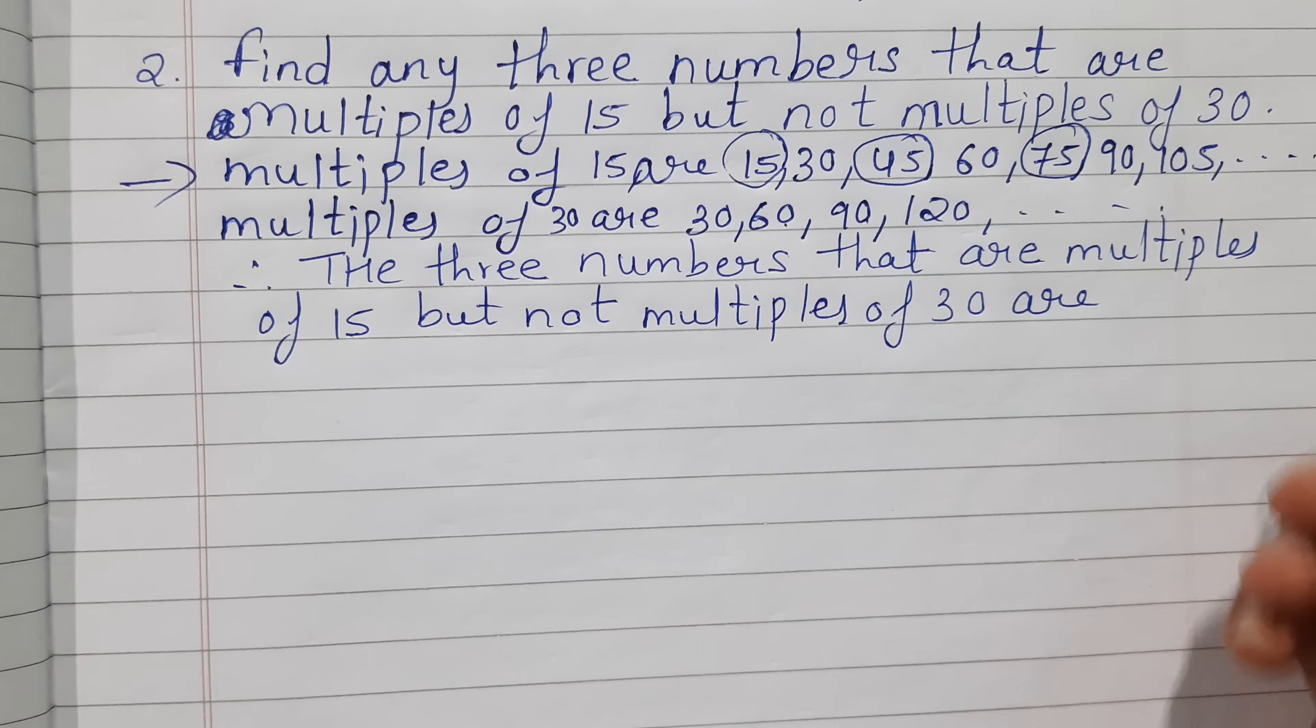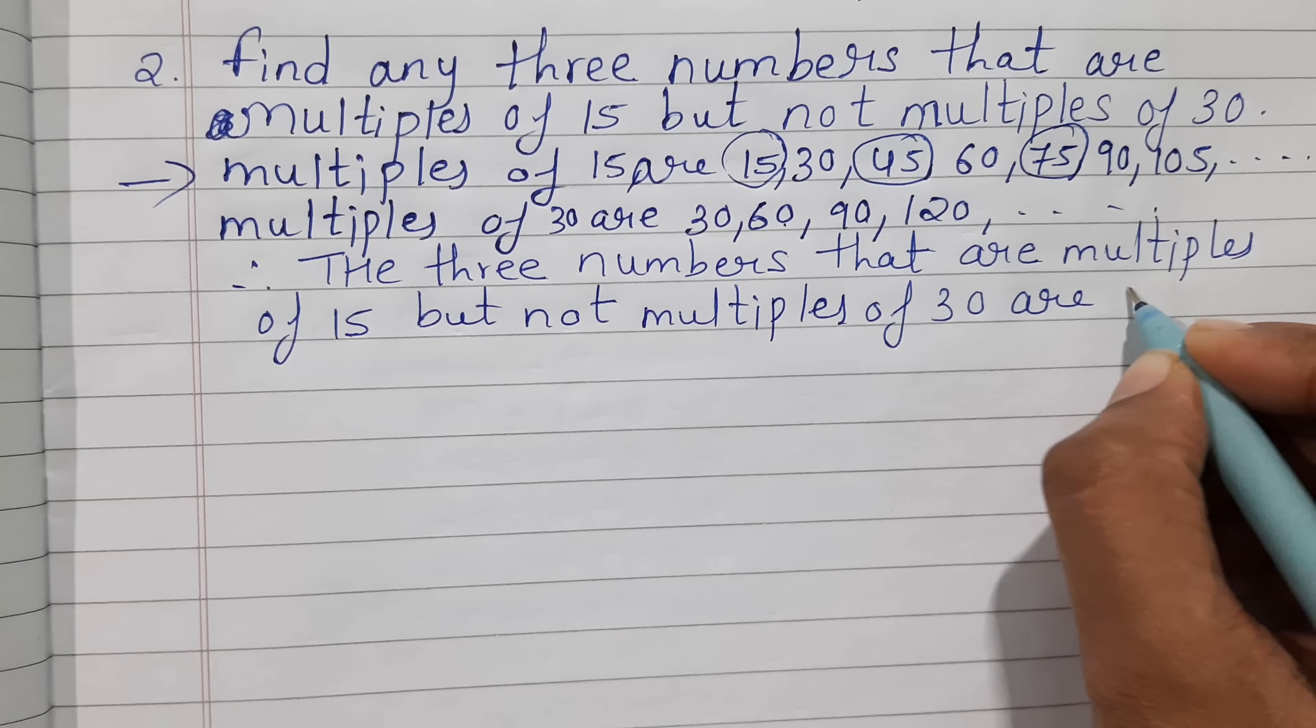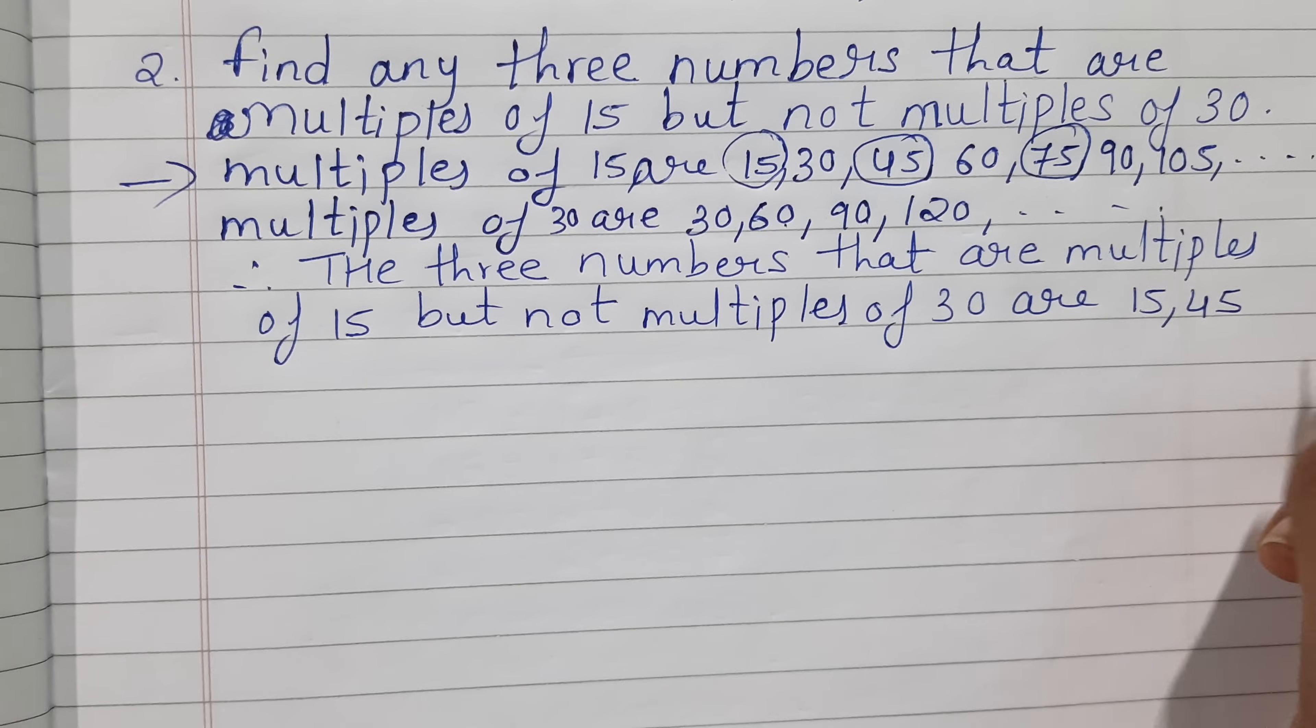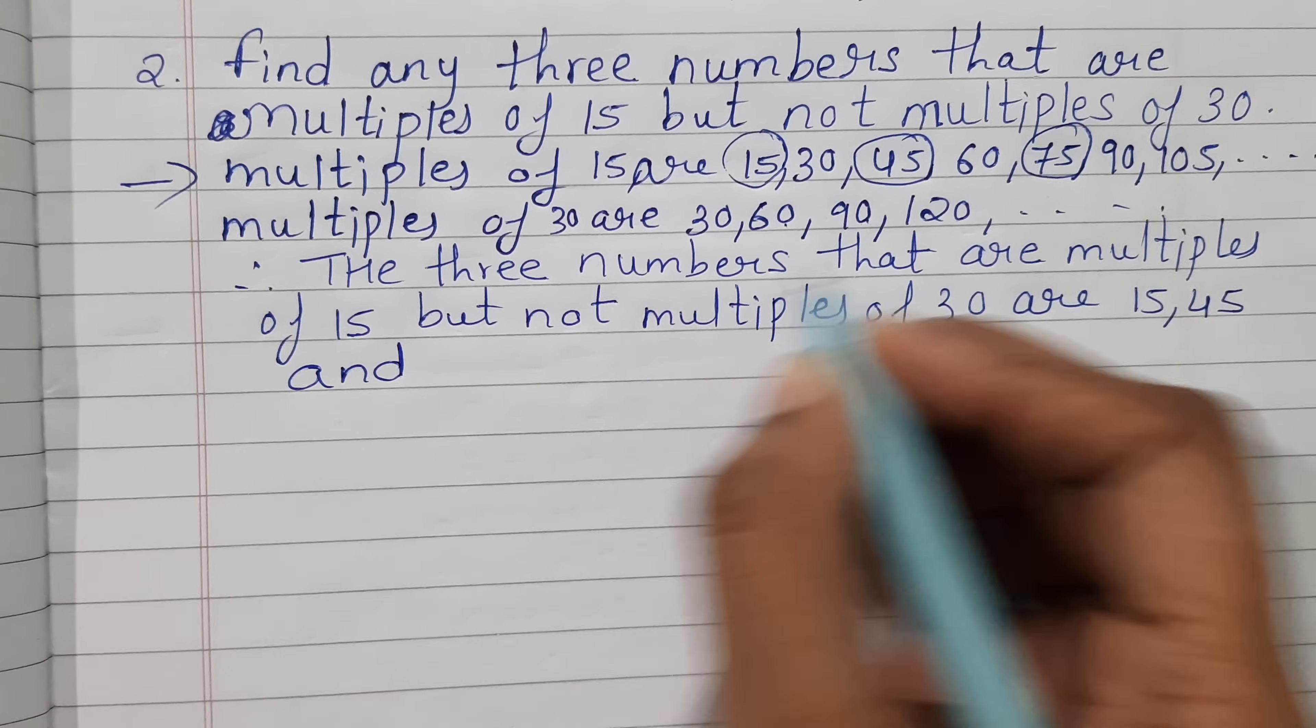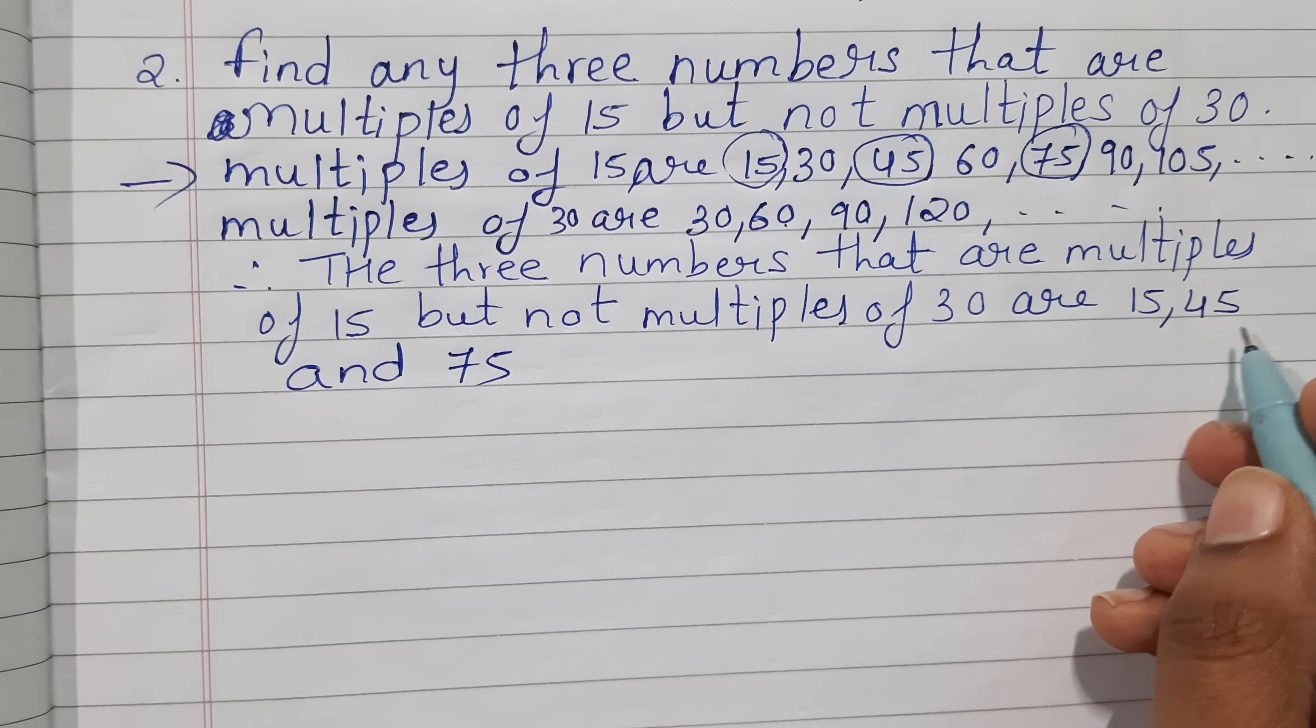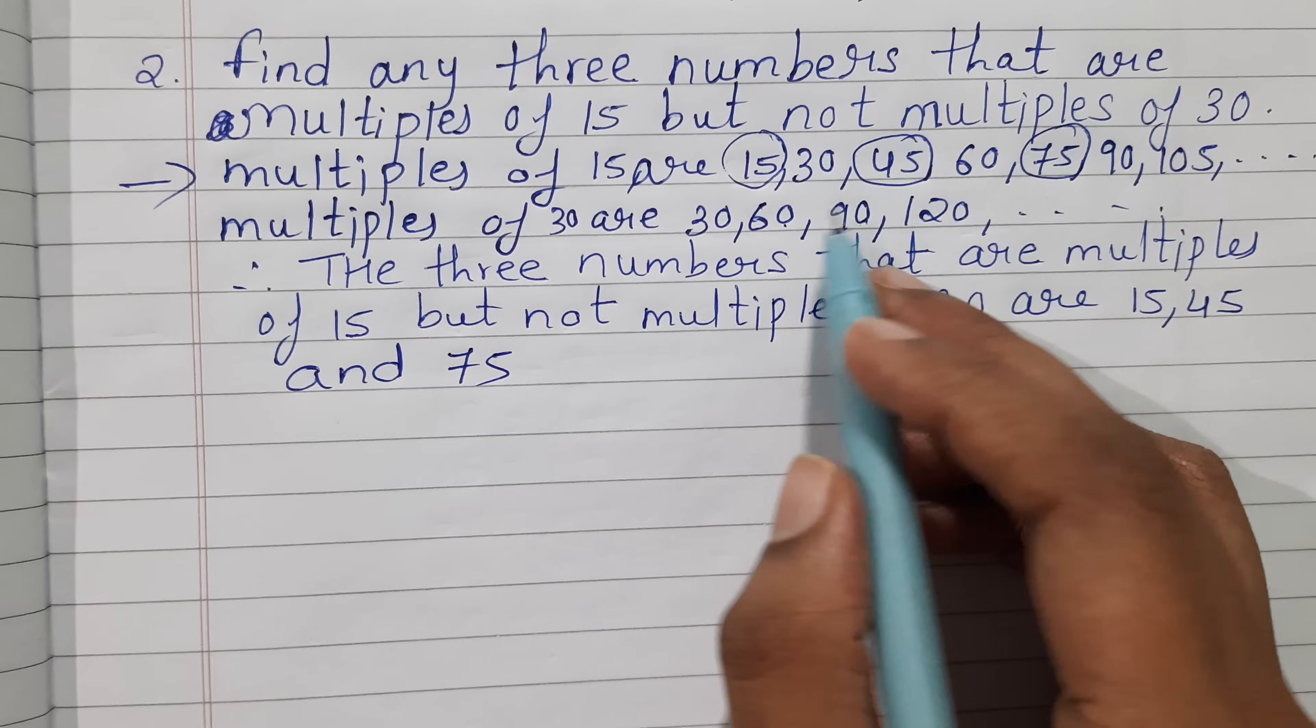Okay, so 15, 45, and 75 - these are the three numbers.